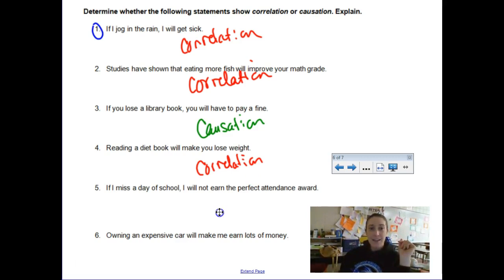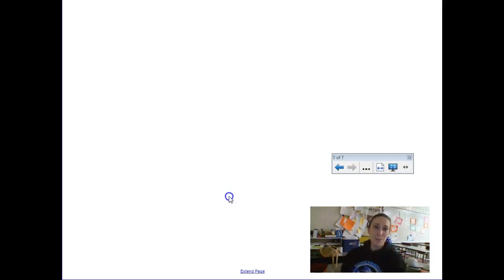If I miss a day of school I will not get the perfect attendance award. That is a causation. The fact that you missed school took you out of the list of kids with perfect attendance. Owning an expensive car will make me earn lots of money. Again, I don't think so, but that's a correlation. As a scientist we can look into details, you know, why is it that people who own expensive cars tend to make more money? Well that's kind of chicken and the egg, isn't it? If you make a lot of money maybe you buy a more expensive car. But just because I happen to purchase an expensive car doesn't mean I'm going to magically make more money.